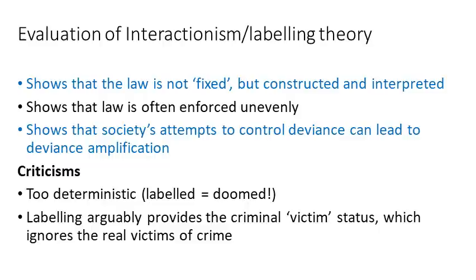When it comes to evaluating interactionism and labelling theories, a number of key points arise. Whilst it shows that the law is not fixed but constructed and interpreted by individuals — meaning there is going to be subjectivity and variation — it also shows that law is often enforced unevenly and comes down more heavily on some groups than others. It also shows that society's attempts to control deviants can lead to deviance amplification. However, arguably, labelling theory is far too deterministic — it believes that once an individual has been labelled, they are doomed to act out that label, when we know this is not always the case. Furthermore, labelling arguably provides the criminal with victim status, which ignores the real victims of crime.